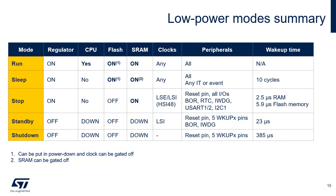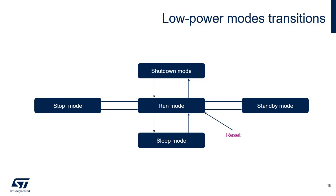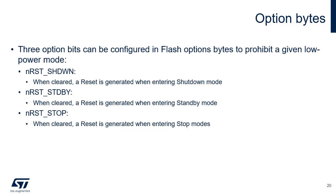Here's a summary of all the STM32C0 power modes. The device can transition from run mode to any of the low-power modes, and from any low-power operating mode to run mode. Transiting from one low-power mode to another is impossible. Three bits are available in the flash option bytes to prohibit a given low-power mode. One bit configures reset generation when entering shutdown mode, another when entering standby mode, and the last when entering stop mode.